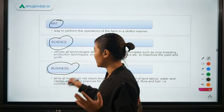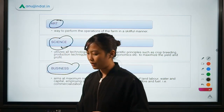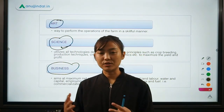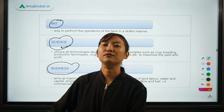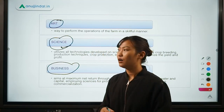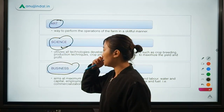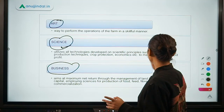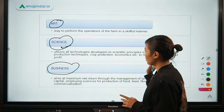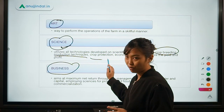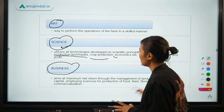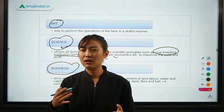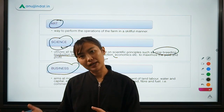Agriculture is also a science because there is a lot of use of scientific knowledge and technologies that are researched upon and implemented at the ground level in the field. Examples include crop breeding, production techniques, crop protection, as well as economics — mainly aimed at increasing productivity, yields, or making crops resistant to pests and diseases.